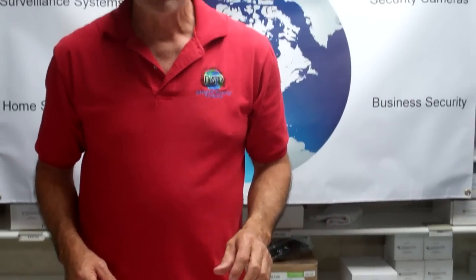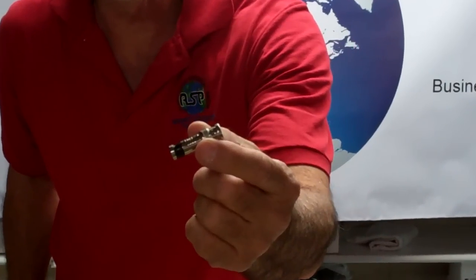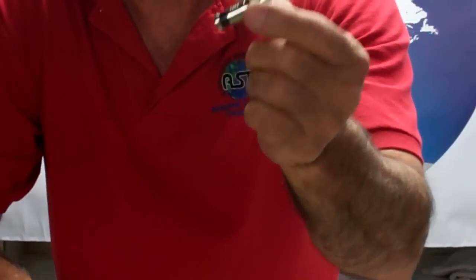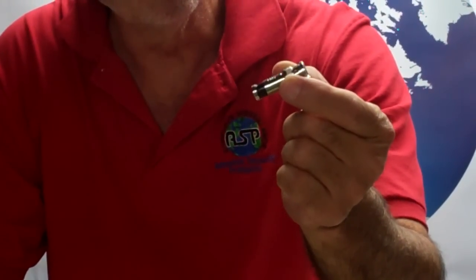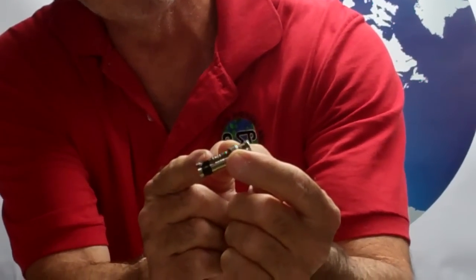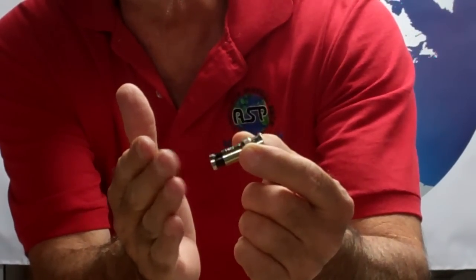We're going to be using a compression connector. Here is a compression connector. Ours already has a center pin right in there so it's considered a one piece connector. When it's applied properly this base piece here showing the black that will compress into it and hold the Siamese in place.